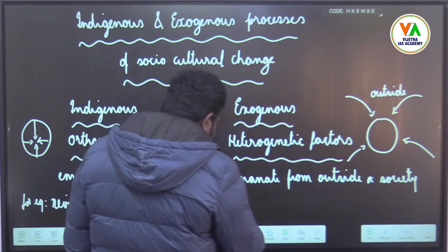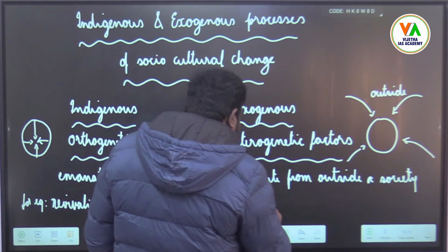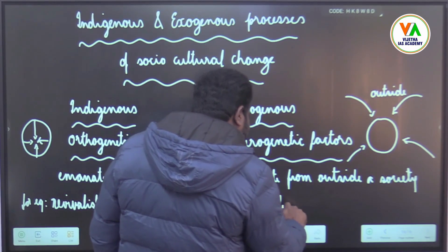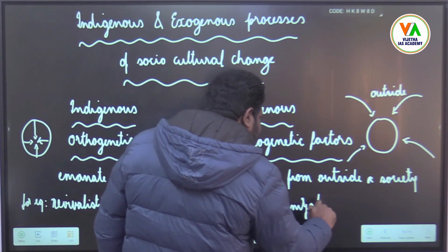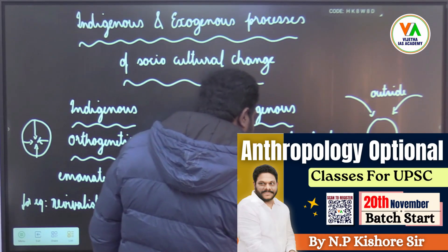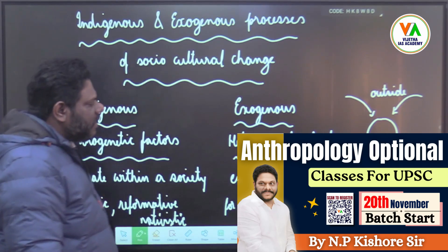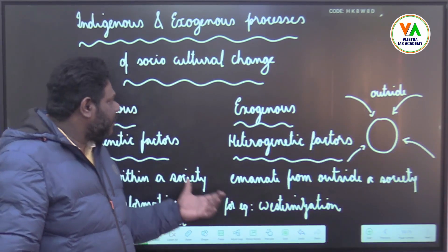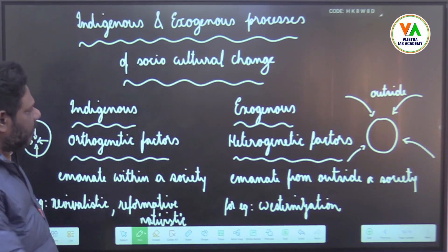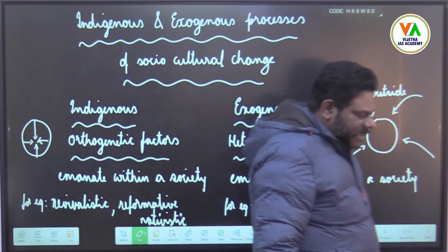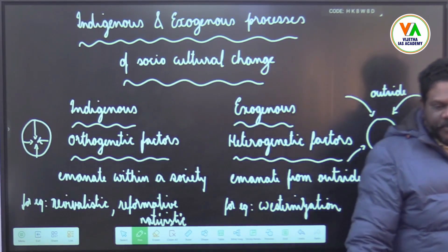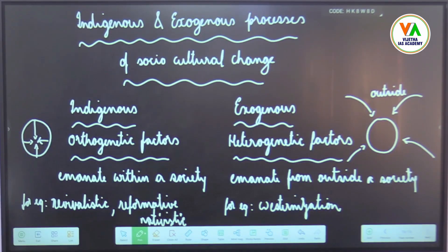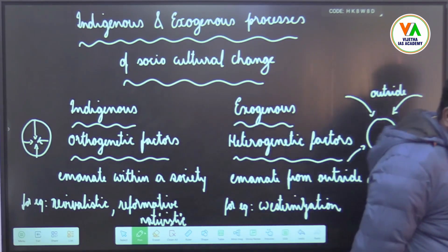For example, you can see westernization. Westernization is because of the impact of the west on eastern countries, and these are the factors from outside which bring a socio-cultural change. Please write these: indigenous processes are due to orthogenetic factors which emanate from within a society.